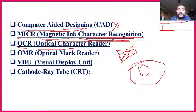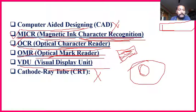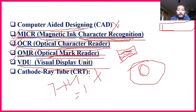OCR — Optical Character Reader — is very important. OMR — Optical Mark Reader — is also important. VDU — Visual Display Unit — already discussed. So from this section: MICR, OCR, OMR, VDU — four more abbreviations. Total so far: 7 plus 4 equals 11 important abbreviations.